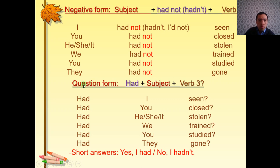Question form or interrogative form: had plus subject plus verb 3. We just reverse had and subject. For example, had I seen, had you closed, had he, she, it stolen, had we trained, had you studied, had they gone. And short answers: yes I had, no I hadn't.